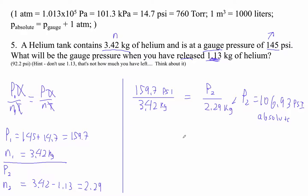So now we want to figure out what the gauge pressure is, because it says, what's the gauge pressure? So, p absolute is pressure gauge plus one atmosphere. So let's see, absolute is 106.93. Gauge is what we want, and then an atmosphere in psi is 14.7.